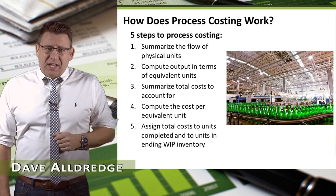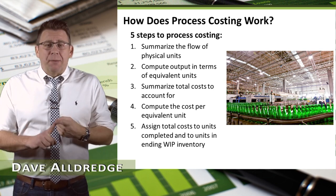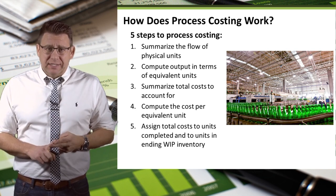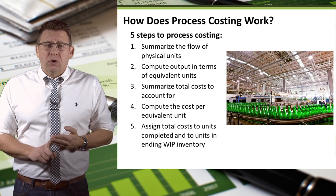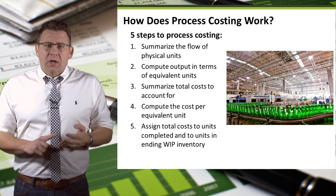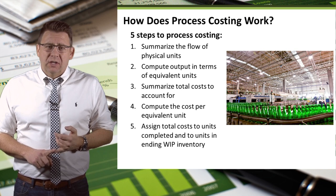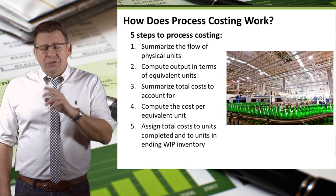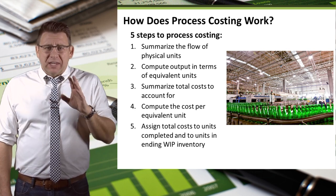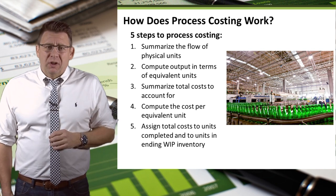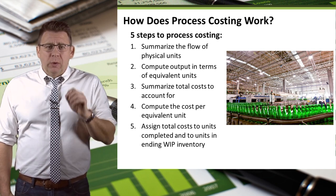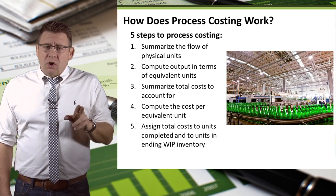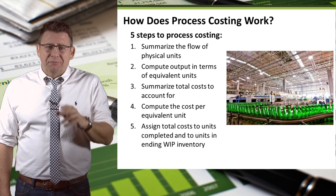There are five steps in process costing. They are: summarize the physical flow of units, compute output in terms of equivalent units, summarize total costs that need to be accounted for, compute the cost per equivalent unit, and finally assign total cost to units completed and to units in ending inventory. This last step is the real reason we have the prior four. Without the five steps we wouldn't be able to figure out the cost of the units completed and transferred out, nor the cost of the partially completed ending inventory.